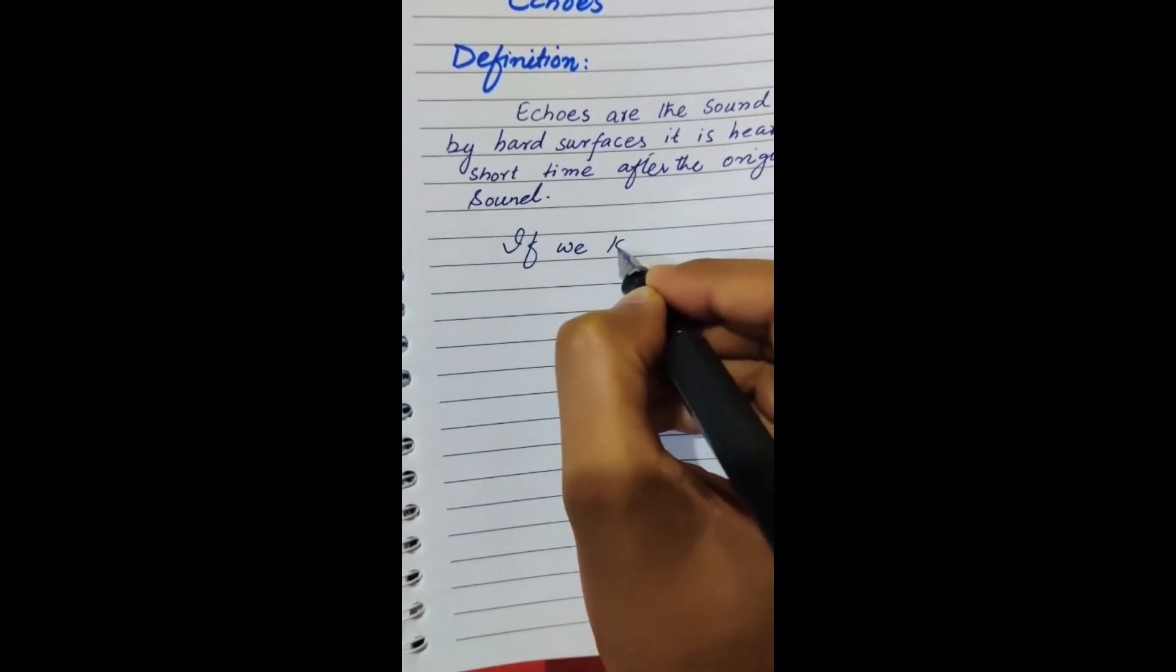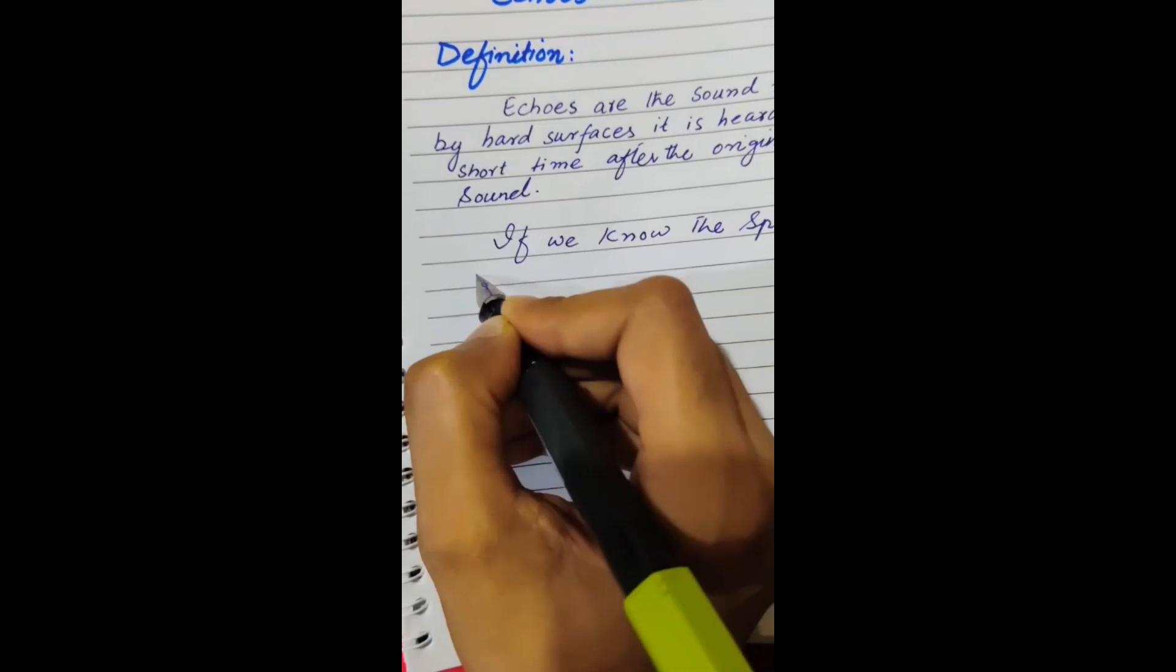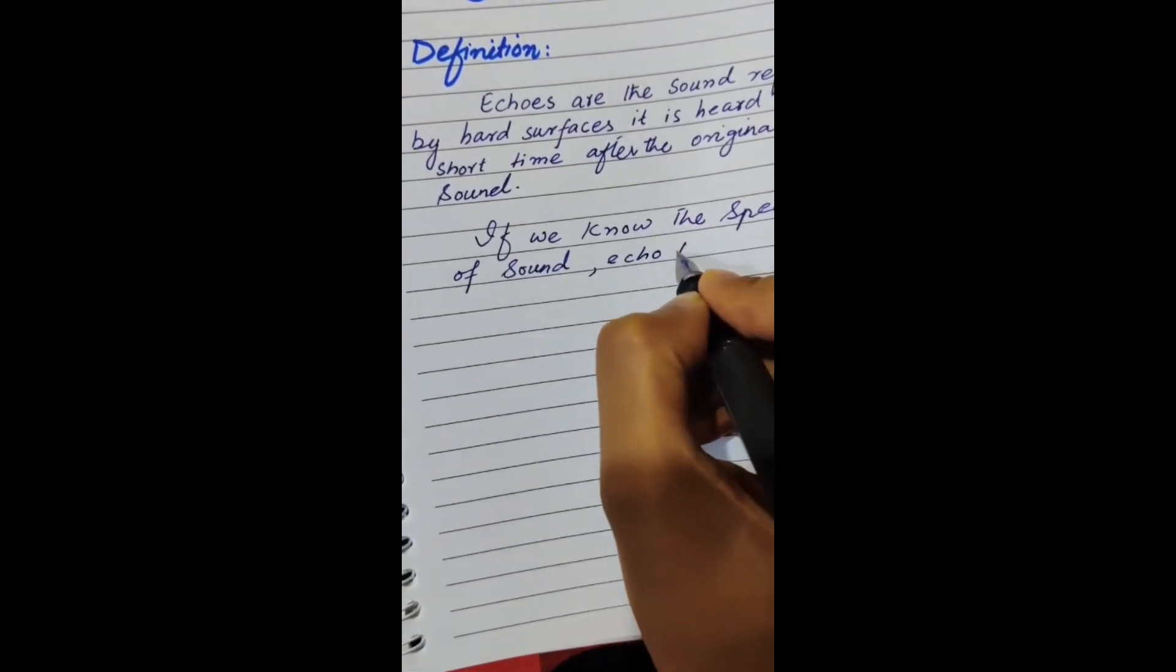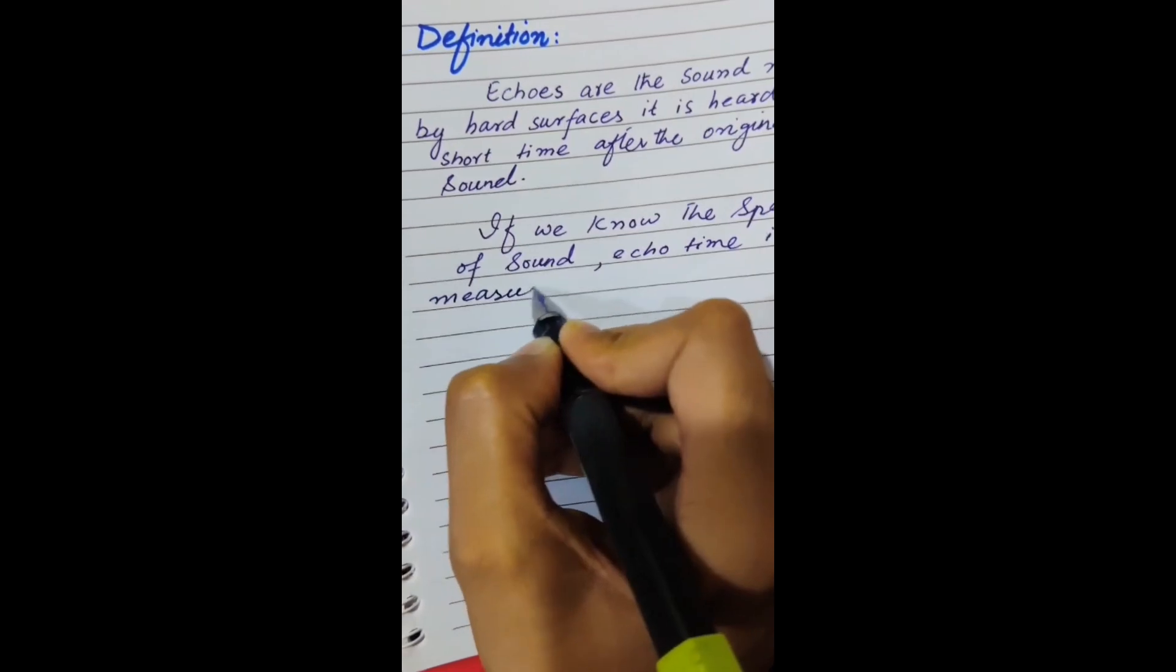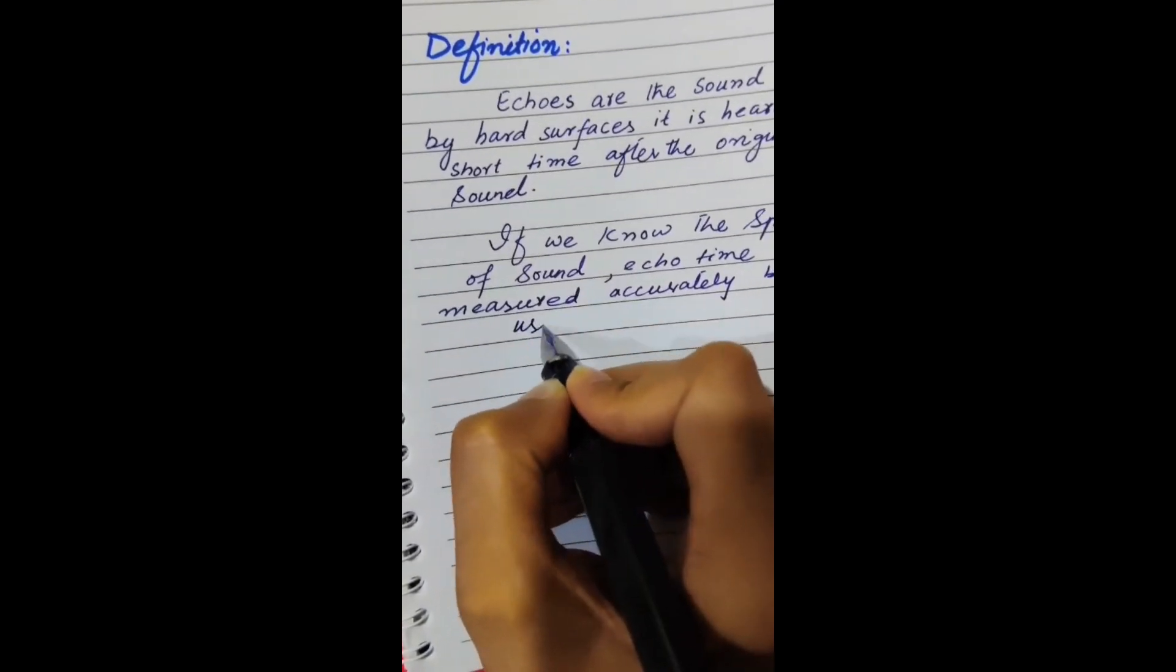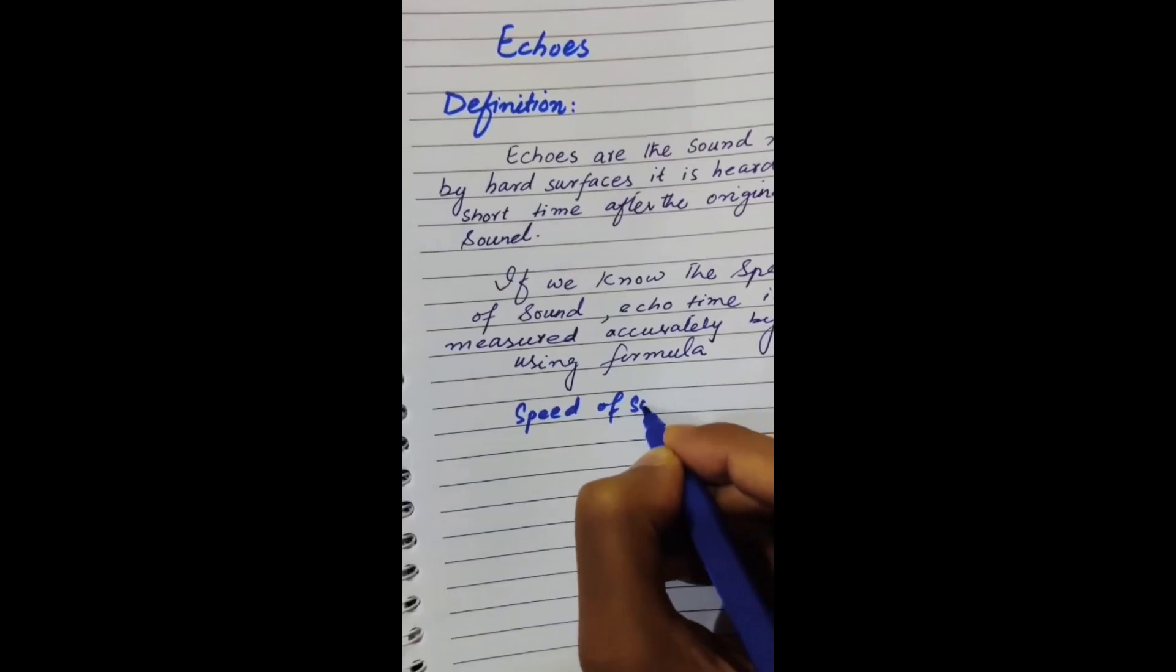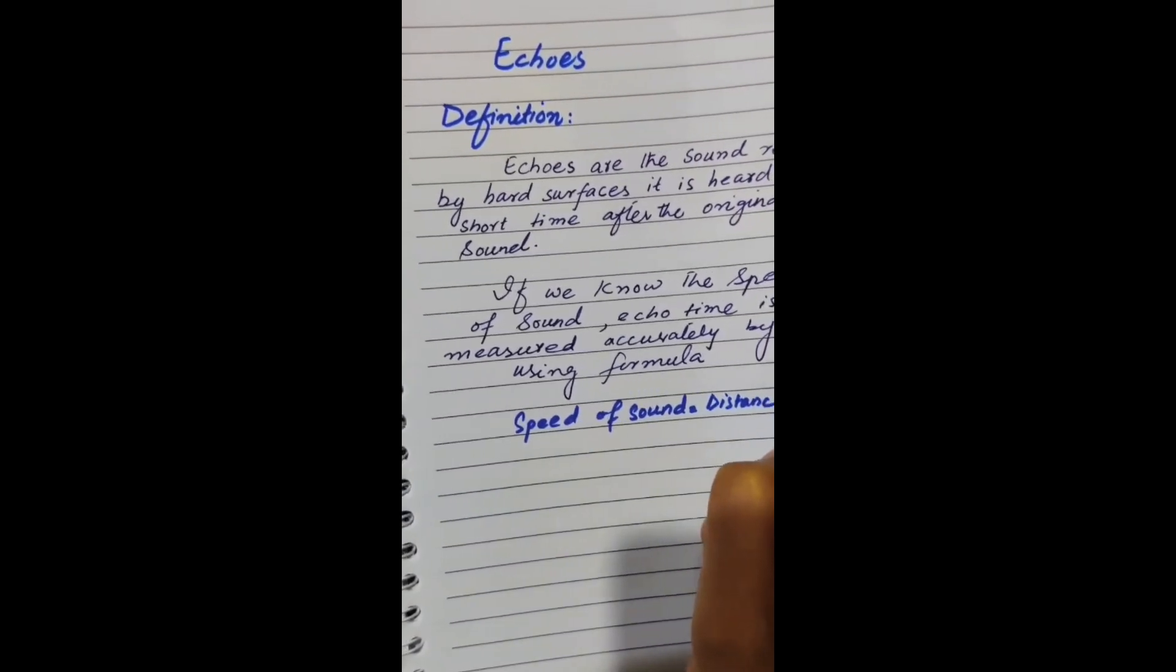If we know the speed of sound, echo time is measured accurately by using the formula: speed of sound equals distance by time.